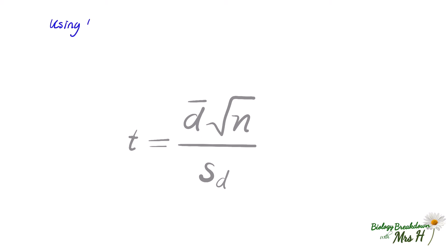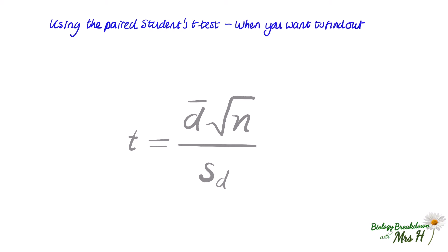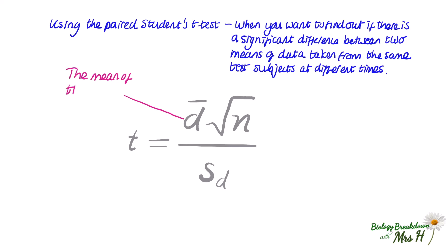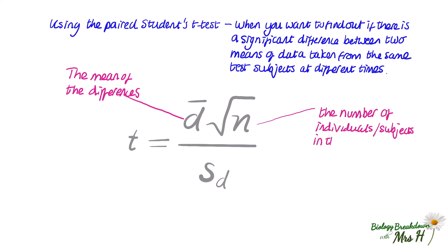Now we'll look at the paired student's t-test. You use this when you want to find out if there is a significant difference between two means of data taken from the same test subjects at different times. You will be given all the formulas in an exam — you just need to remember what values to substitute in. In the formula, d-bar is the mean of the differences, n is the number of individuals in the sample, and sd is the standard deviation of the differences.